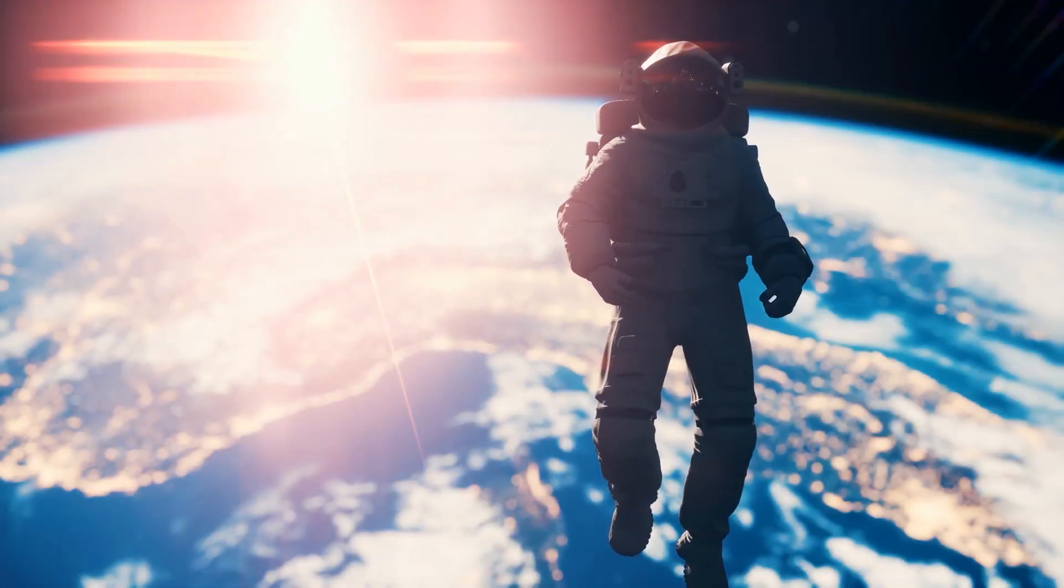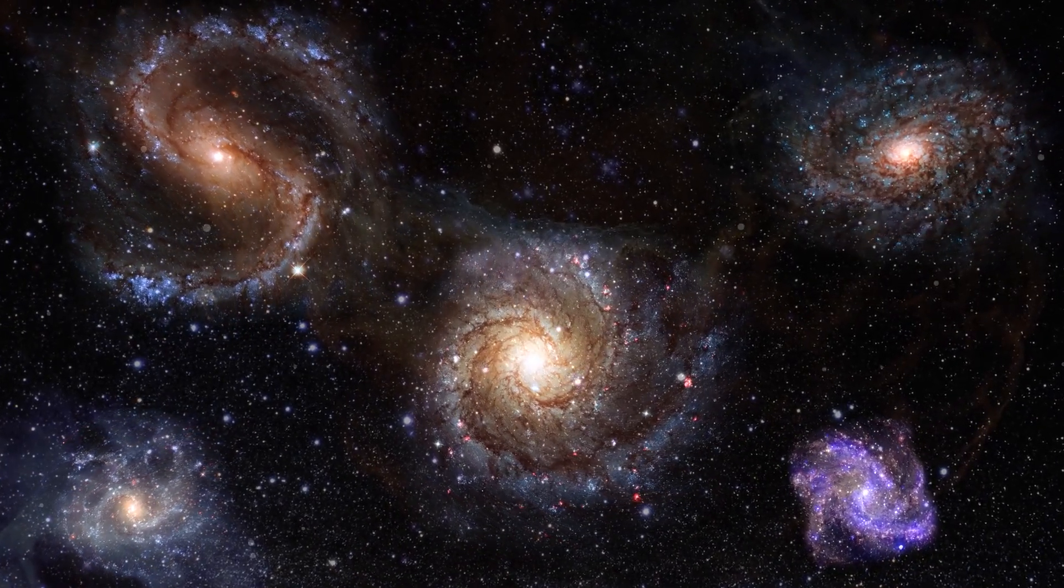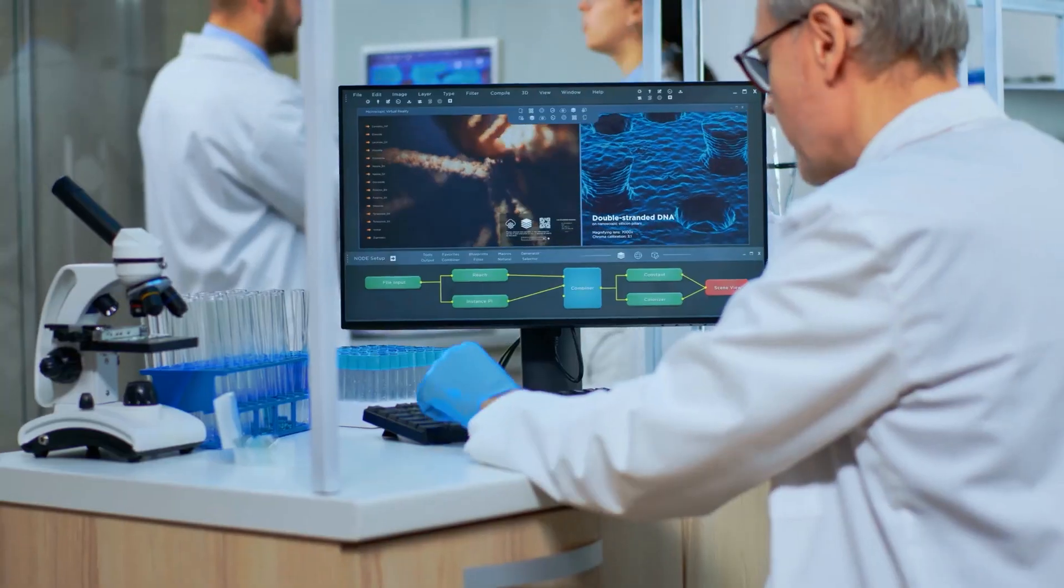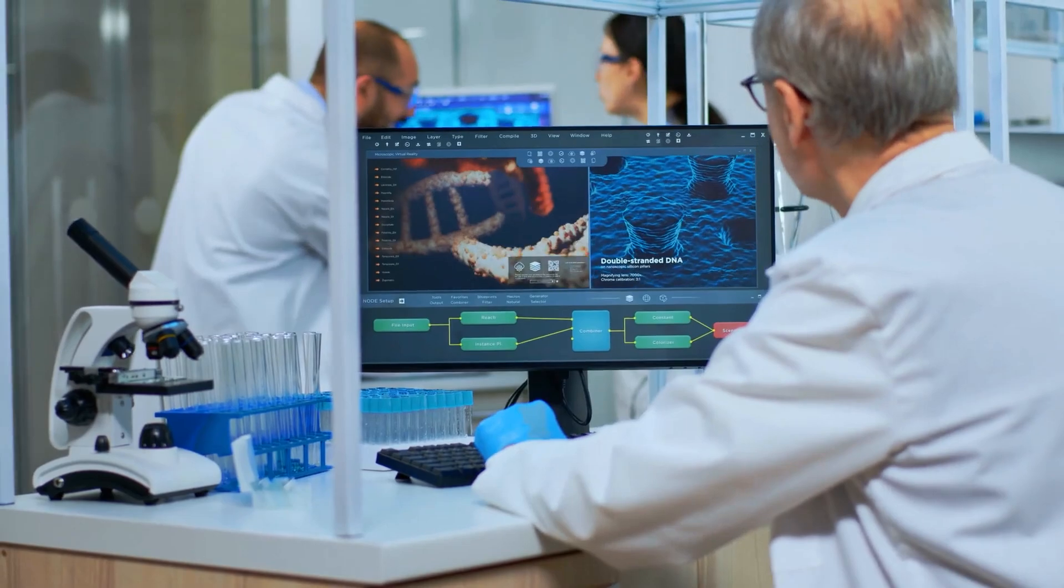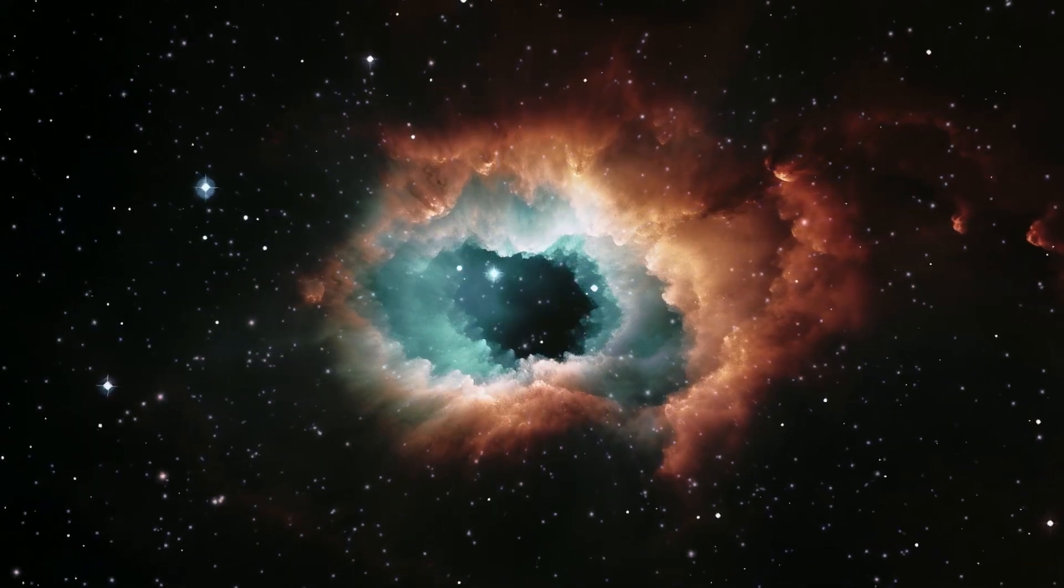Astronomers were taken aback when Webb found thousands of exceptionally bright early galaxies, some of which even resembled our own. It was a finding that severely questioned their most fundamental theories about how the cosmos came to be.